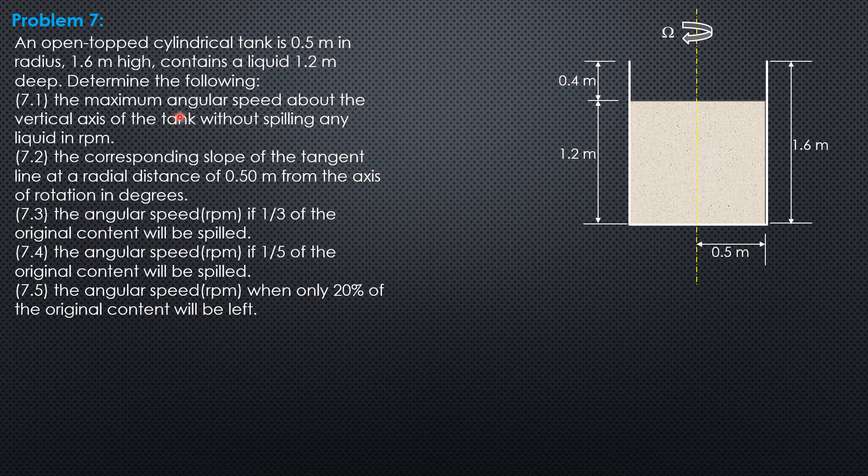So for number one, the angular speed about the vertical axis of the tank without spilling any liquid. So the maximum height of the imaginary parabolic surface of zero pressure will be double that of 0.4. So 2 times 0.4. And we equate that to the formula 0.0005589 omega square radius 0.5 square. So that omega is in revolutions per minute. So solving for omega, 75.67 revolutions per minute.